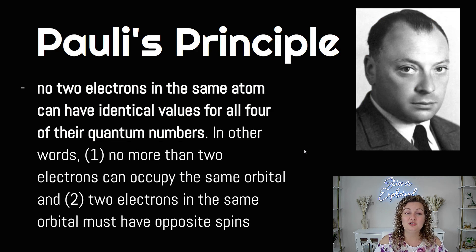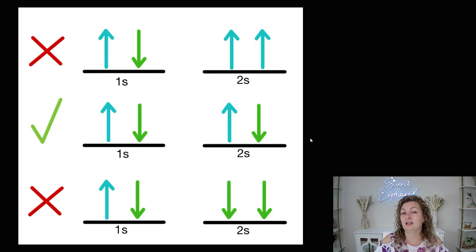And then there's Pauli's principle. And Pauli was a scientist and he did say no two electrons in the same atom can have the identical value for all four of their quantum numbers. So in other words, what he's really trying to say is no more than two electrons can occupy the same orbital, which is what we're doing for the little box or the underline. And two electrons in the same orbital must have opposite spin. So one has to have an upward spin and one has to have a downward spin. They both can't be up and they both can't be down.